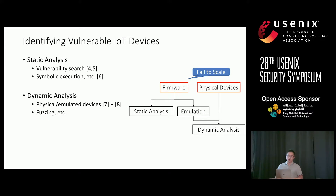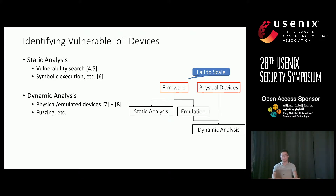Previous research focused on two directions. One is static analysis — researchers get vulnerability information from firmware and search other devices' firmware to find whether they are vulnerable, or use static analysis tools like symbolic execution to check for specific vulnerabilities. The other direction is dynamic analysis — getting a physical or emulated device and using tools like fuzzing testing to check for vulnerabilities.